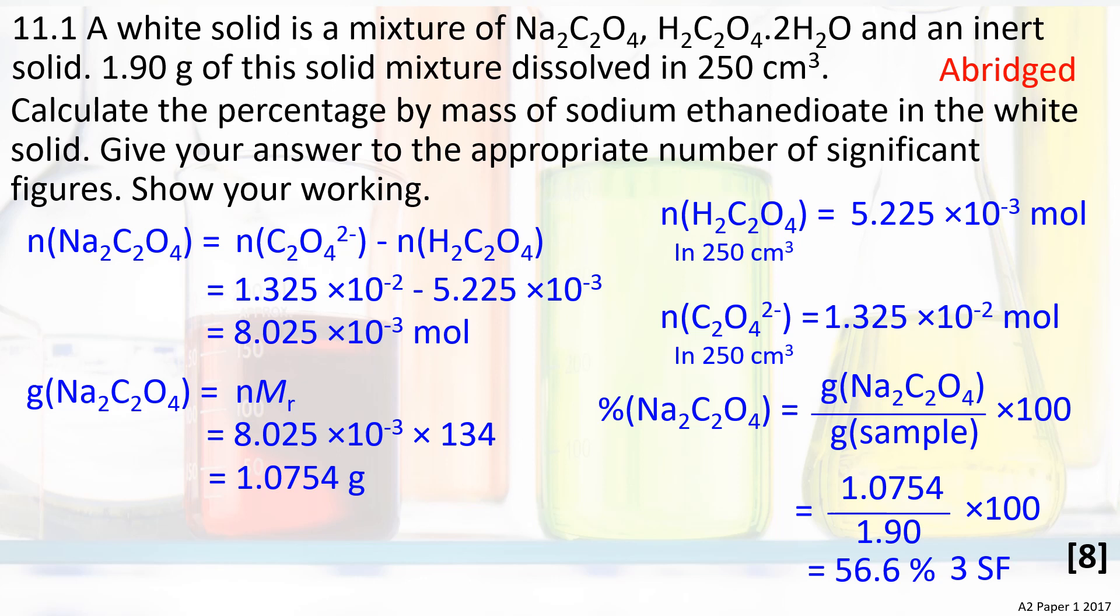The percentage of sodium ethane dioate is found by dividing its mass by the mass of the sample and multiplying by 100. The data in the question is given to three significant figures, so the final answer must also be given to three significant figures. This works out to be 56.6%.